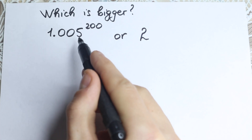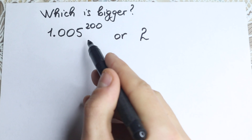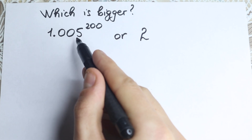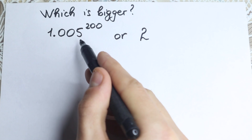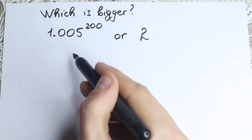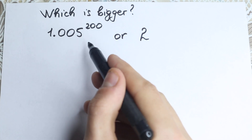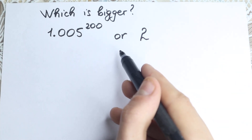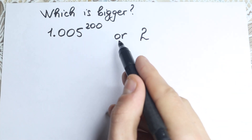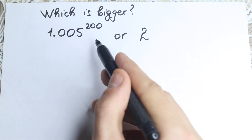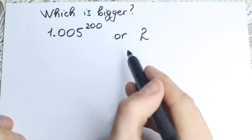We have 1.005 to the power 200, and it's really a bad thing to raise this to the power 200 because it's not a common approach to this problem. We need to know about really interesting math tricks. Of course if you know how to solve this, you can pause the video and try to check which one is bigger — what do you think about this question?